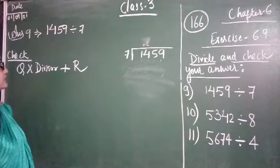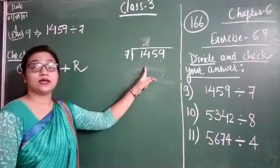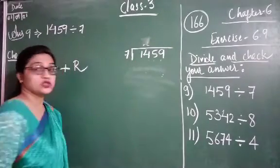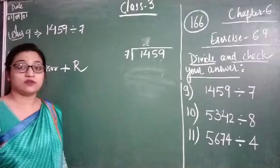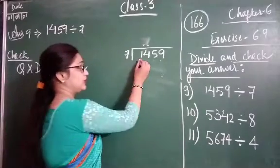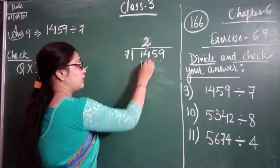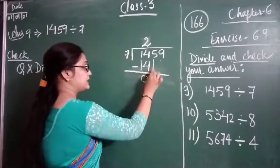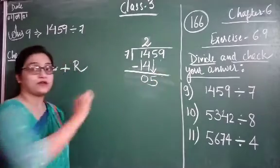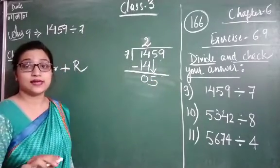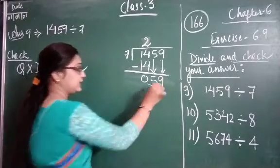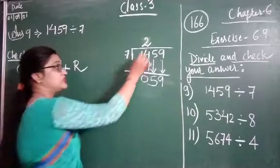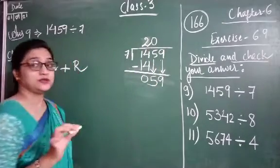Question number 9 is 1459 divided by 7. Let us divide. The first digit is 1, but 1 is less than 7, so we need one more digit — that is 14. 7 twos are 14. 14 minus 14 equals 0. The next digit is 5. Since 5 is less than 7, the next digit is 9, and we bring them together. When writing two digits together, a 0 will appear in the answer, so we put 0 here.